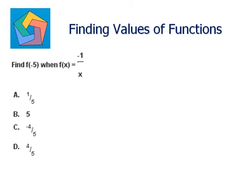Find f of negative 5 when f(x) is equal to negative 1 over x. f of negative 5 means x is equal to negative 5. So we need to find the function value when x is negative 5. We will plug in x as negative 5 in the function.